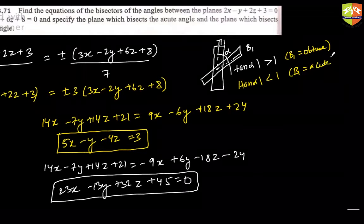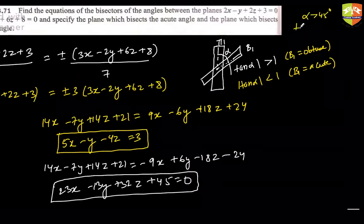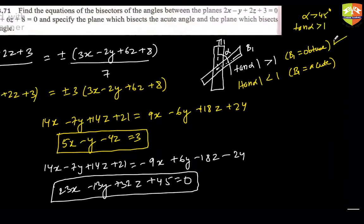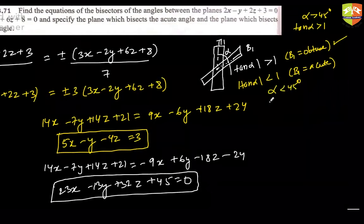How is 1 important here? If it was an obtuse angle bisector, alpha would have been greater than 45 degrees, so tan alpha would have been greater than 1. If that angle were the acute angle, then alpha would have been less than 45 degrees, so tan alpha would have been less than 1.